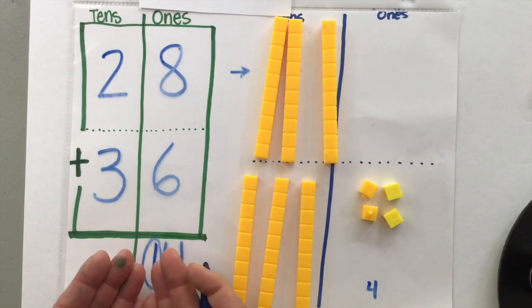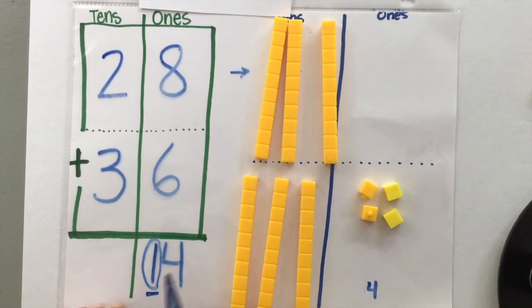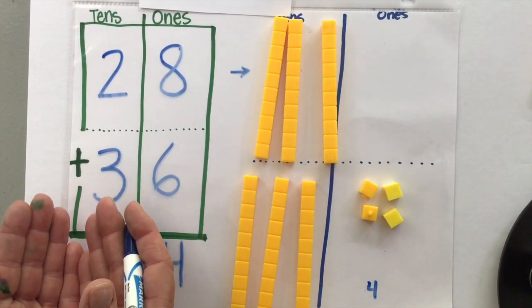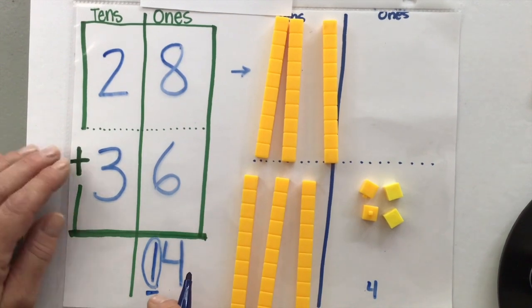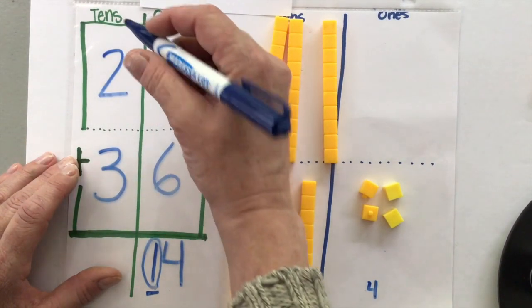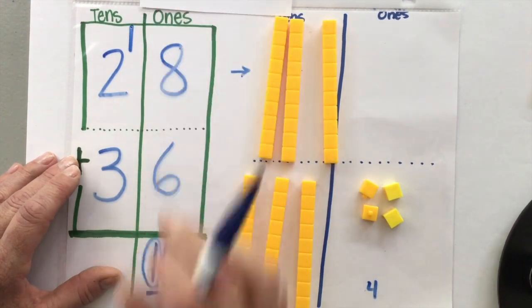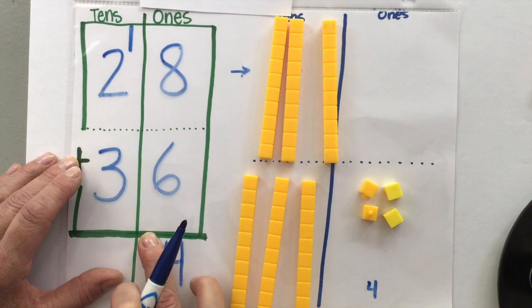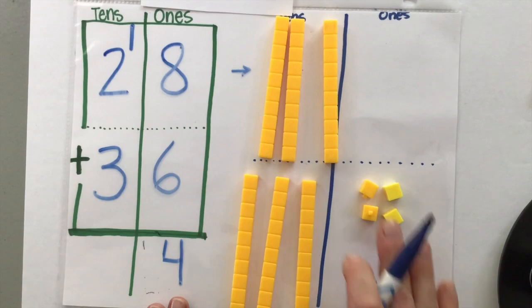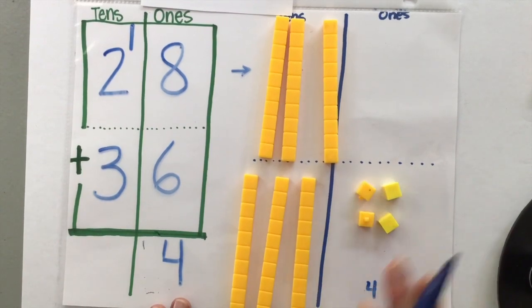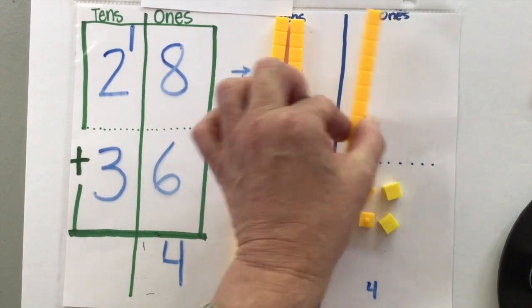So on this column, this one right here was represented by these tens and I carried it over. But like, how am I supposed to carry this number one, this one set of 10? I got to carry it over here to the tens column. Well, what we do is we write a set of 10 up here. That's that one set of 10. So now I have four. This is what this four represents because the one set of 10 is over here.